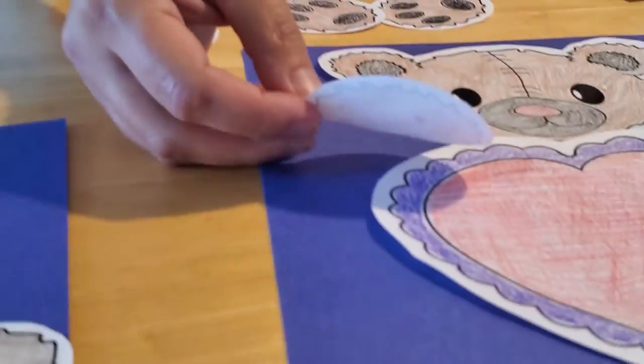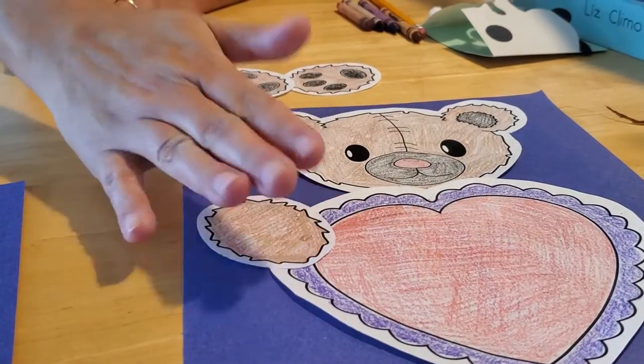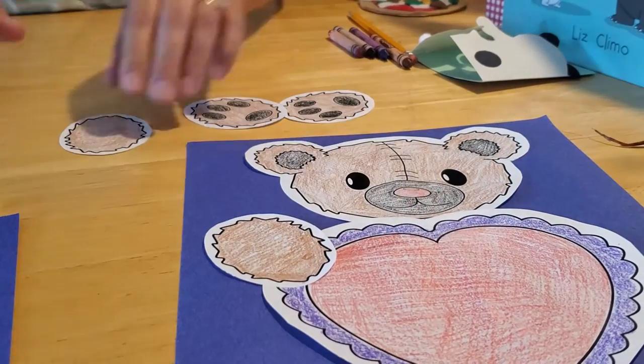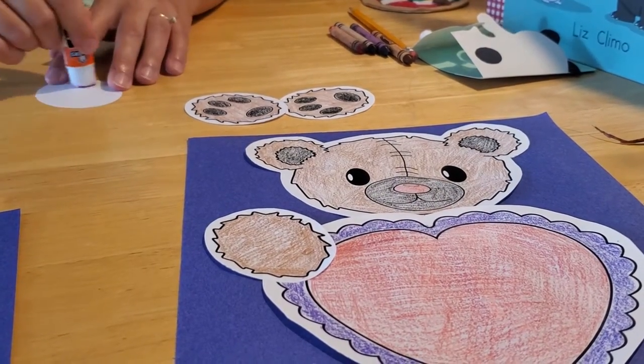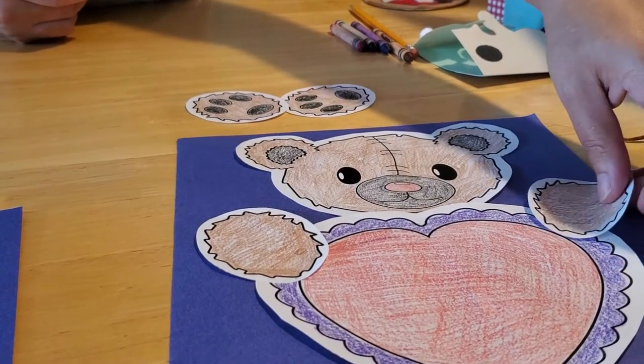So then we're going to take the paws. The top paws are the ones without the pads on them, and here again too we just want to put a little bit of glue on here. And you want to put them kind of like on an angle to kind of make it look like the bear is holding it in his arms a little bit closer up here. And the same with the other one, and we'll put that one on this side like so.